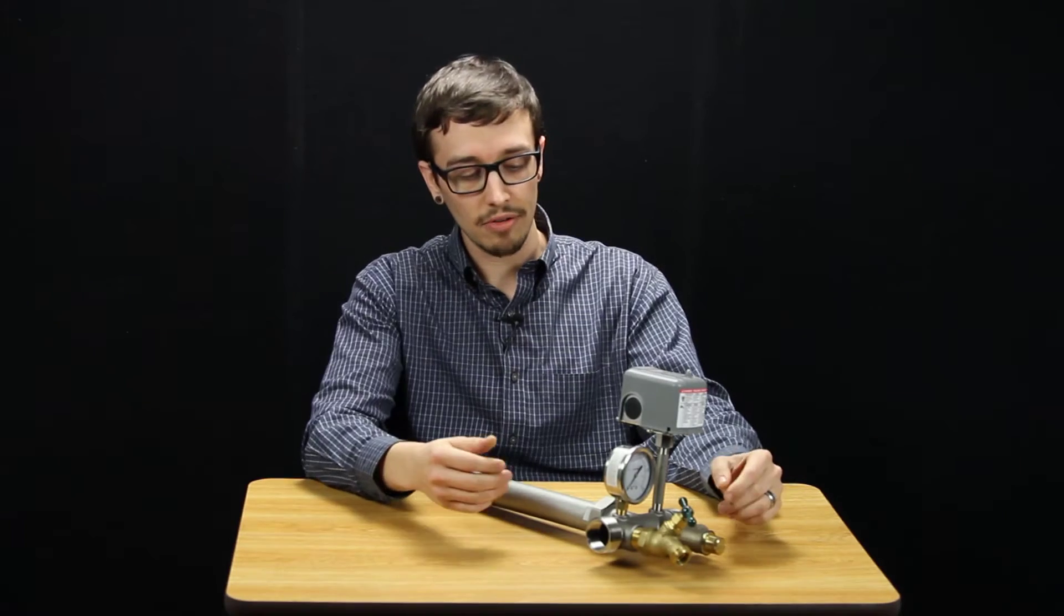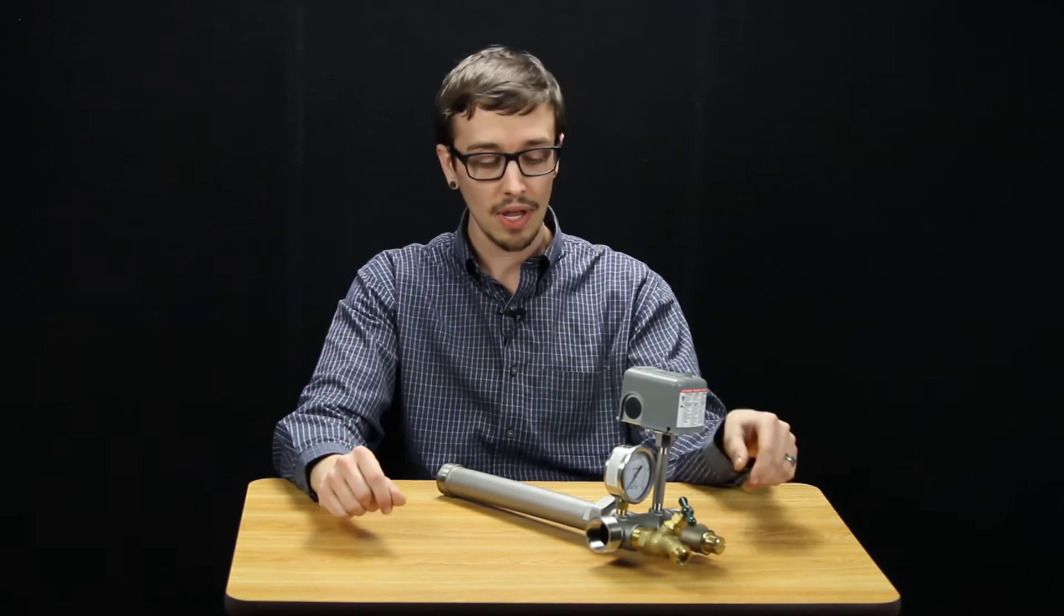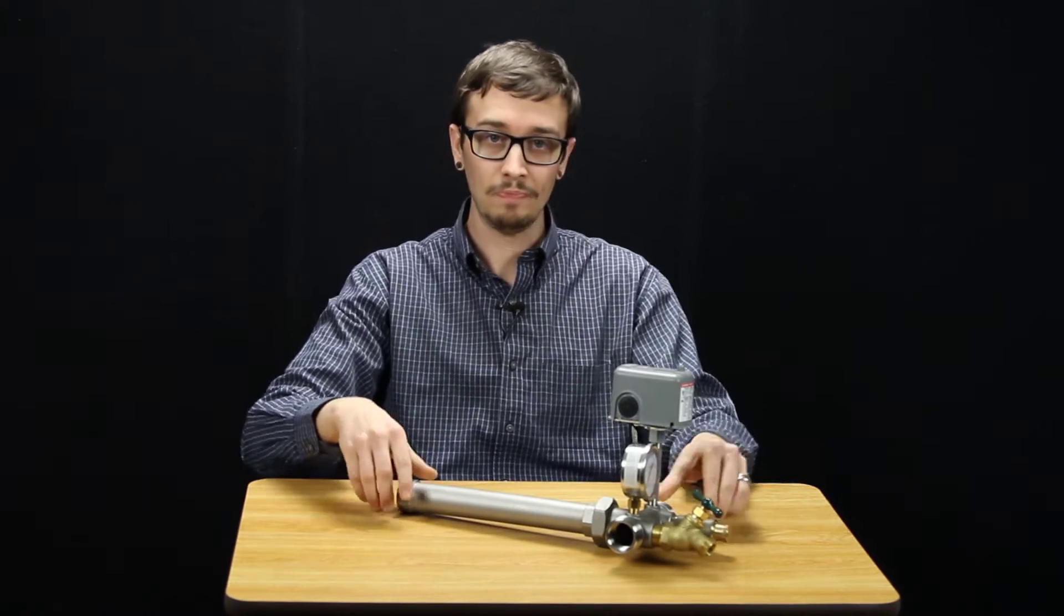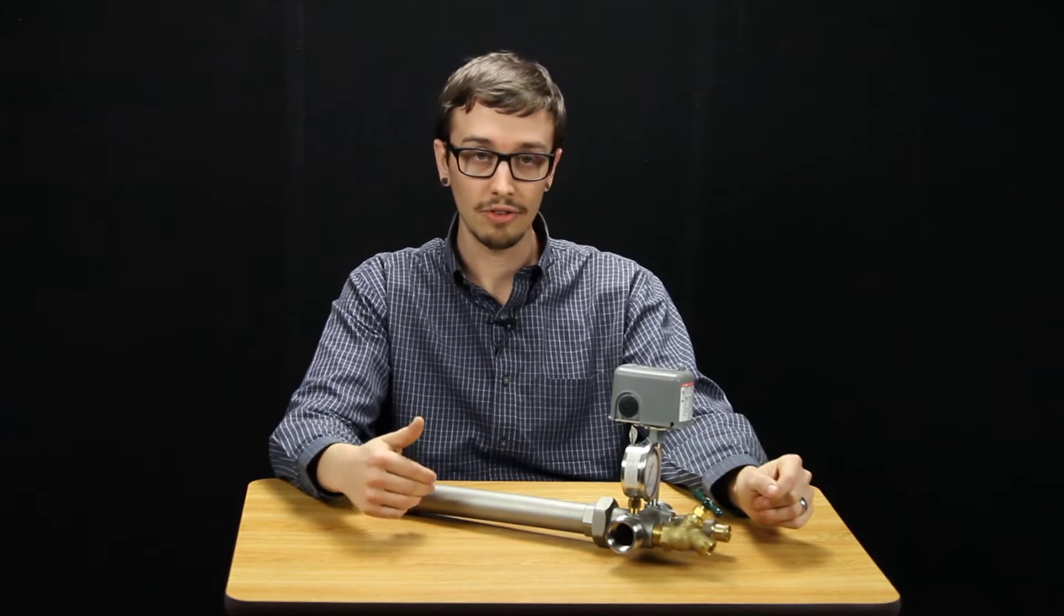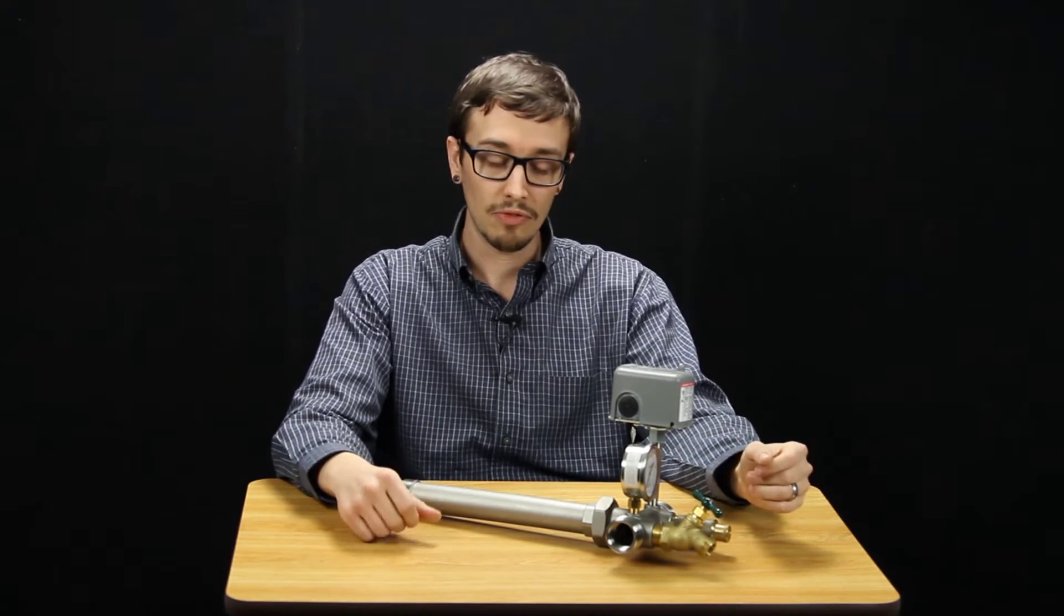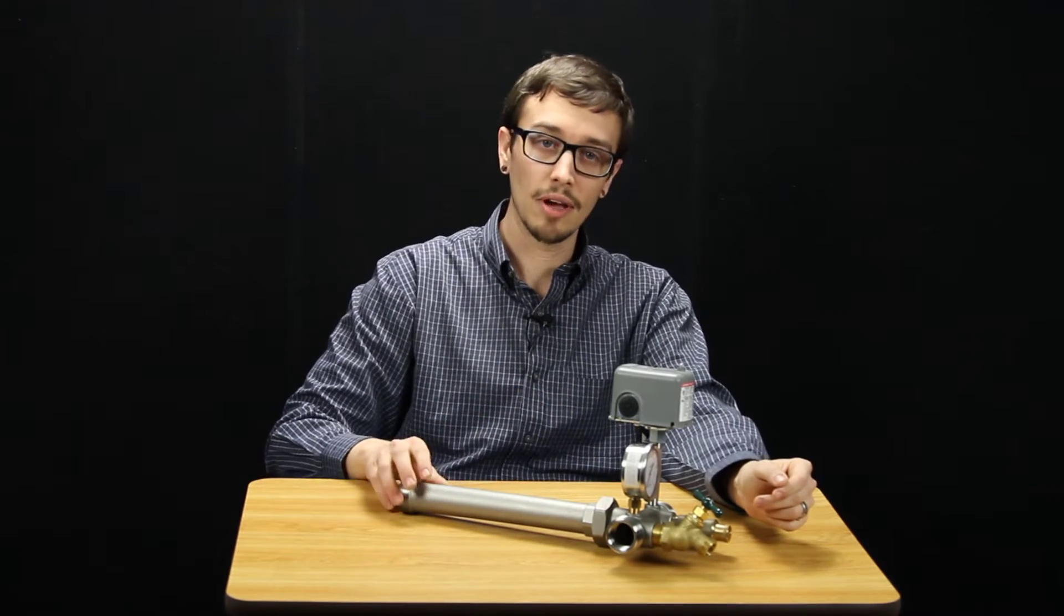First we have the American Granby 14 inch stainless steel tank tee and this also has a union. This is for easy disconnecting and reconnecting to the tank, and if your system ever needs to be serviced or the tank replaced, this is going to come in handy.